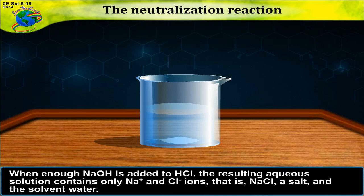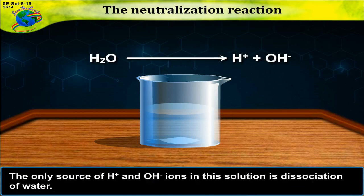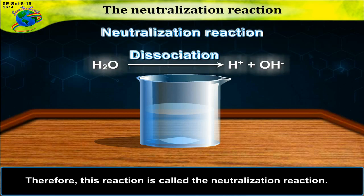When enough NaOH is added to HCl, the resulting aqueous solution contains only Na⁺ and Cl⁻ ions — that is, NaCl, a salt — and the solvent water. The only source of H⁺ and OH⁻ ions in this solution is the dissociation of water. Therefore, this reaction is called the neutralization reaction.